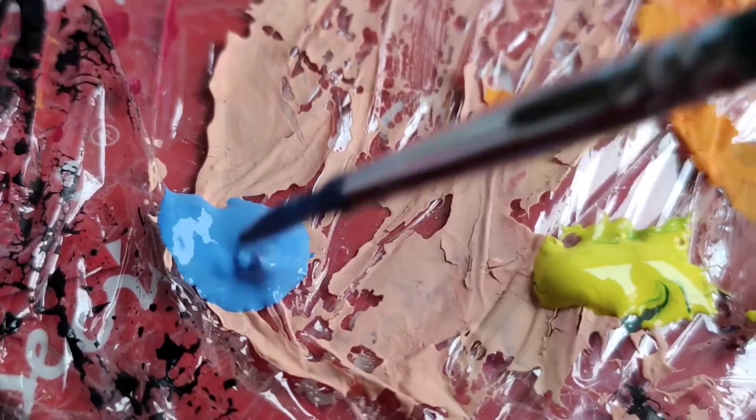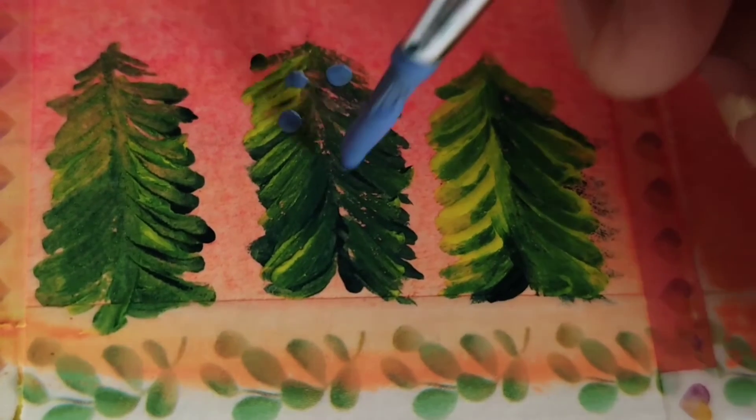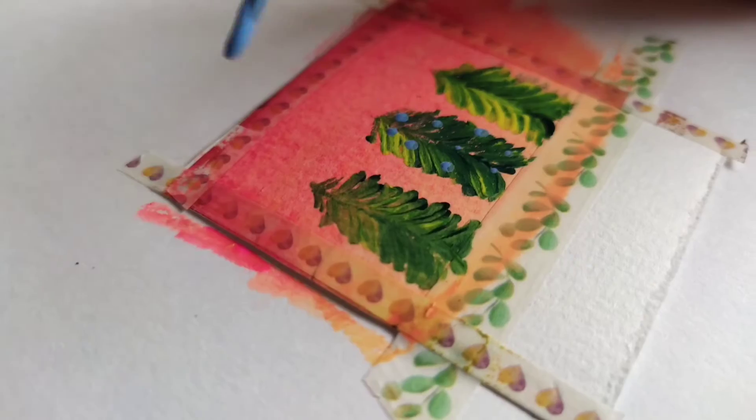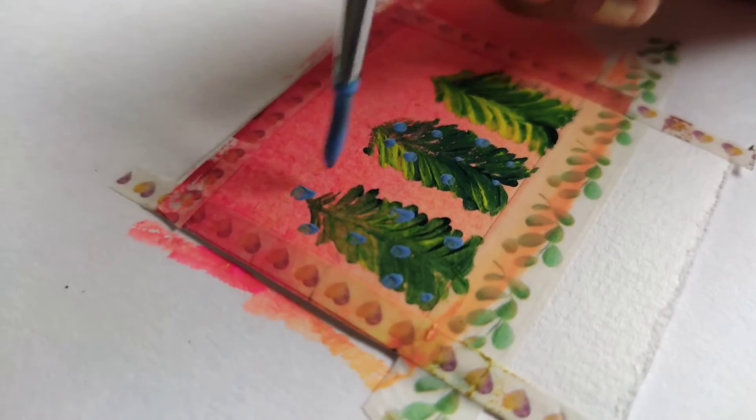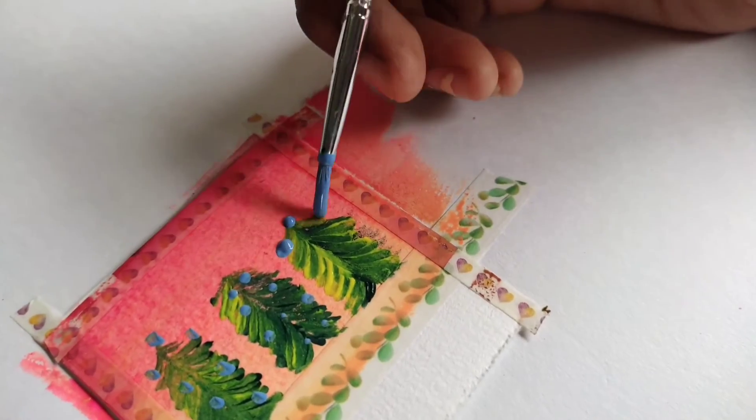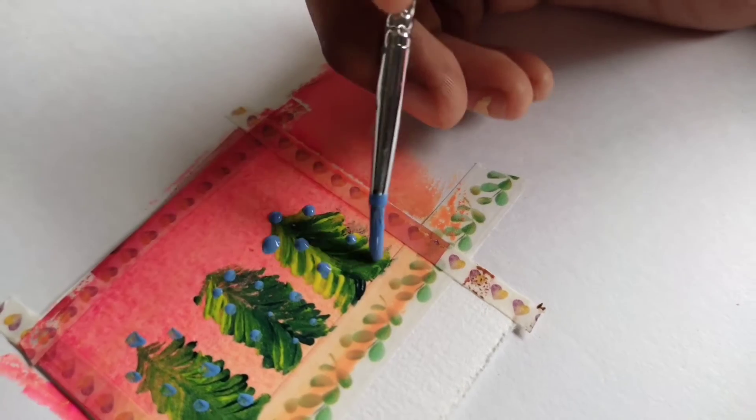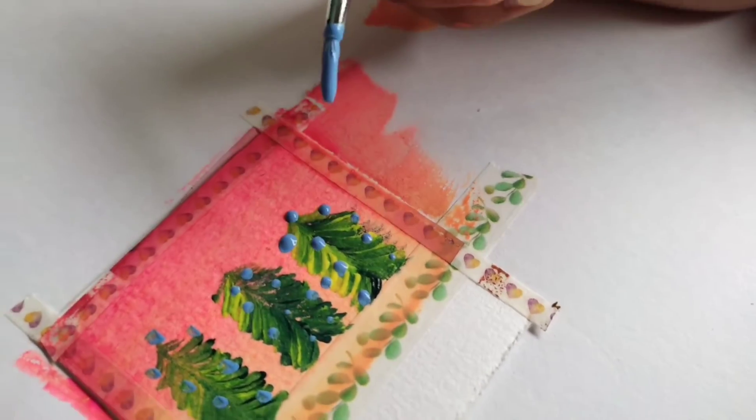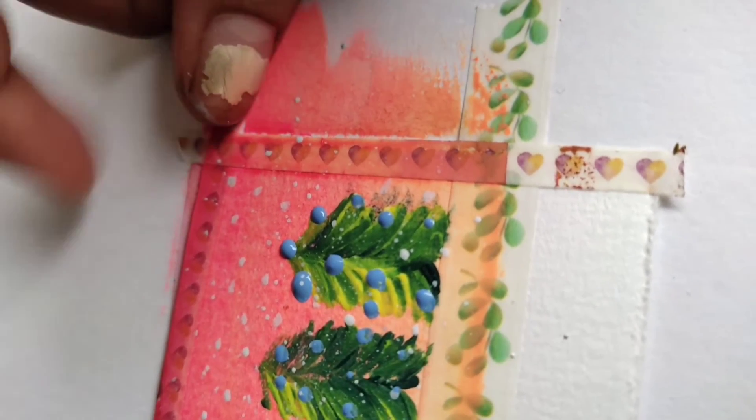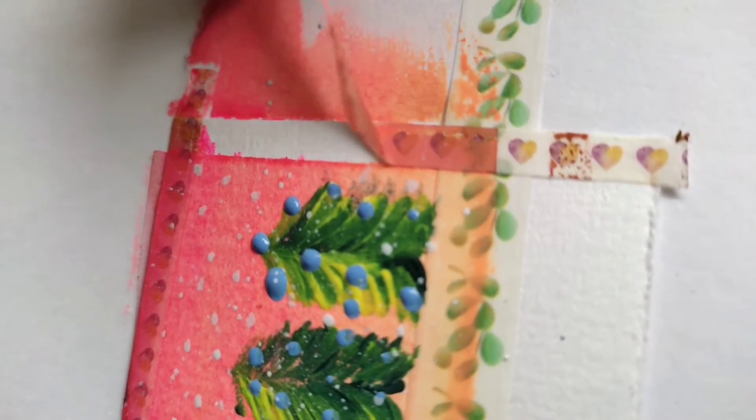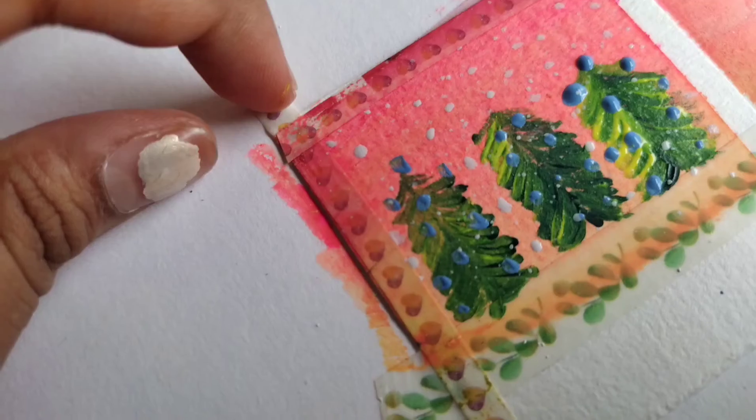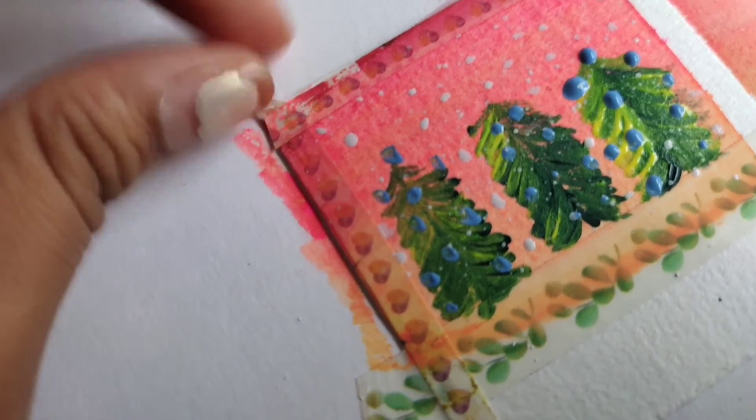With the tree, I'm going to add light blue color like this, like you're going to do a dot around the Christmas tree just to give a look like a Christmas tree. Because Christmas tree is surrounded with beautiful balls. And then I add in white color, just sprinkle it. Once done, let it dry and you can peel off your washi tape.